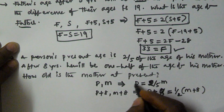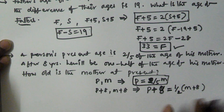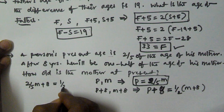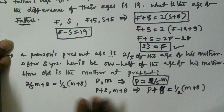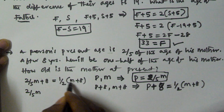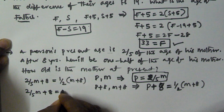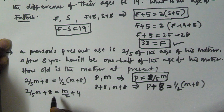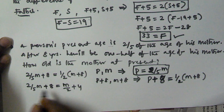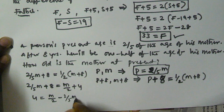Substituting p equals 2 by 5 m into p plus 8 equals 1 by 2 of m plus 8: we get 2 by 5 m plus 8 equals m by 2 plus 4. Moving terms across: 8 minus 4 equals 4, and m by 2 minus 2 by 5 of m. Taking m common, that is 1 by 2 minus 2 by 5, which gives 1 by 10.